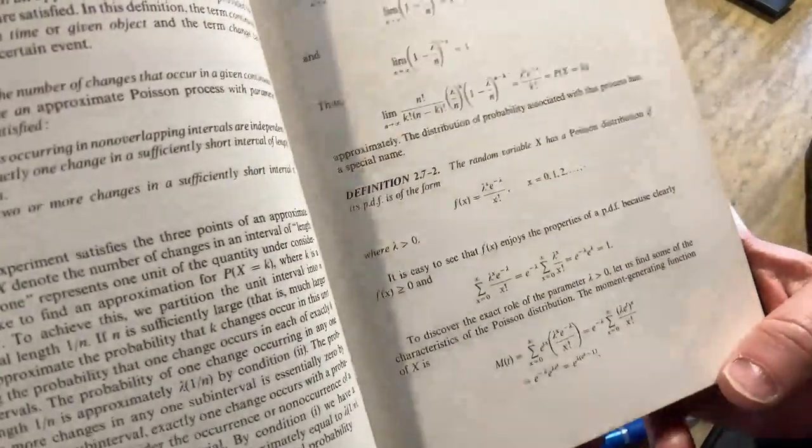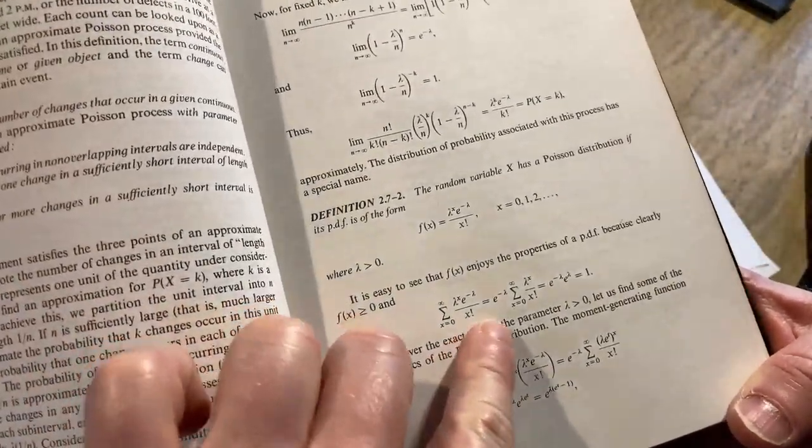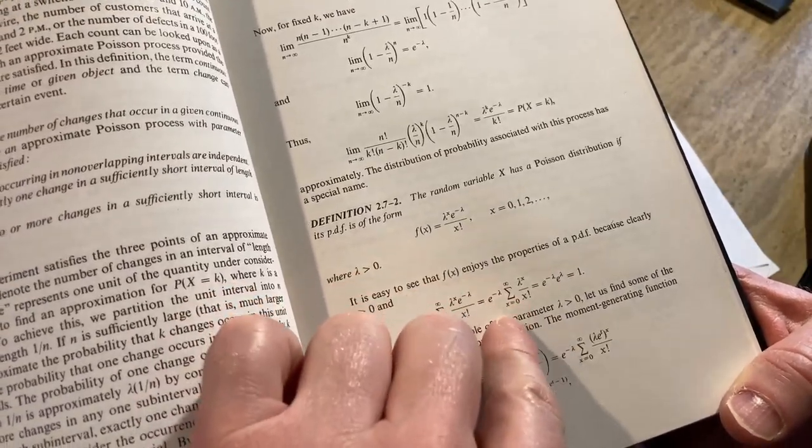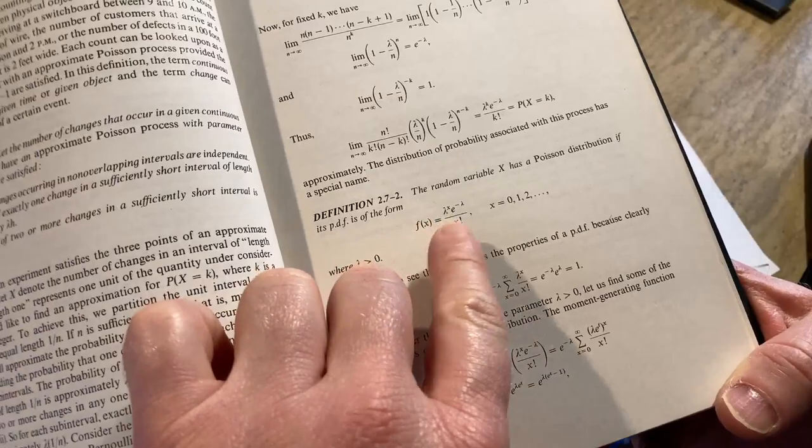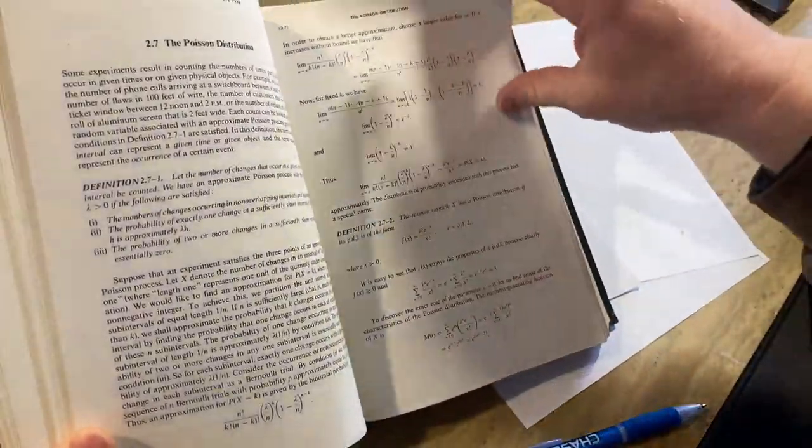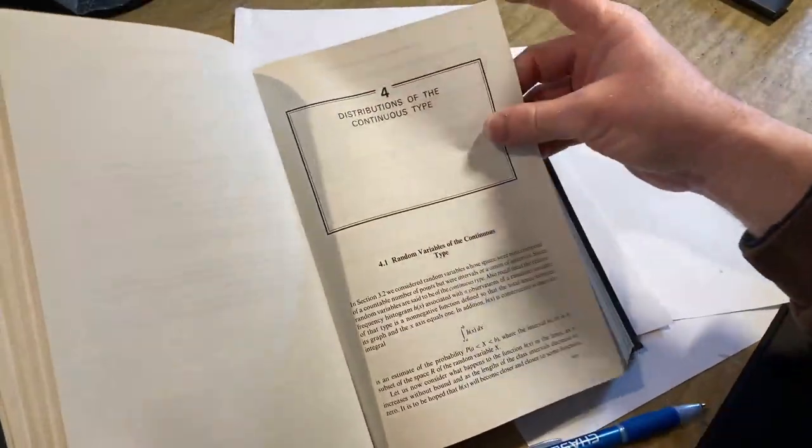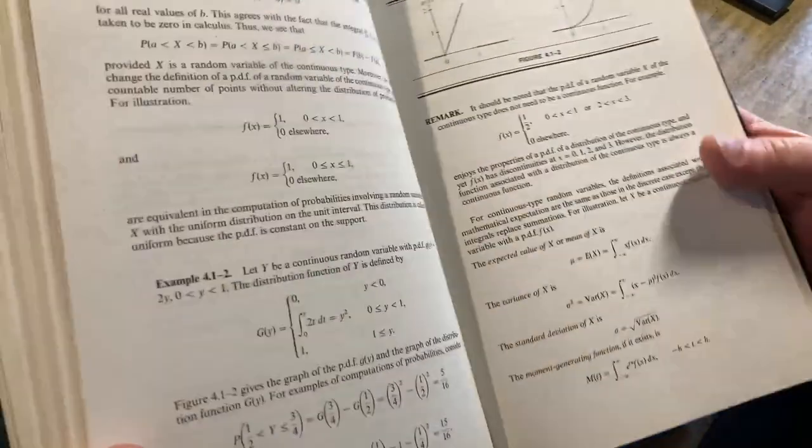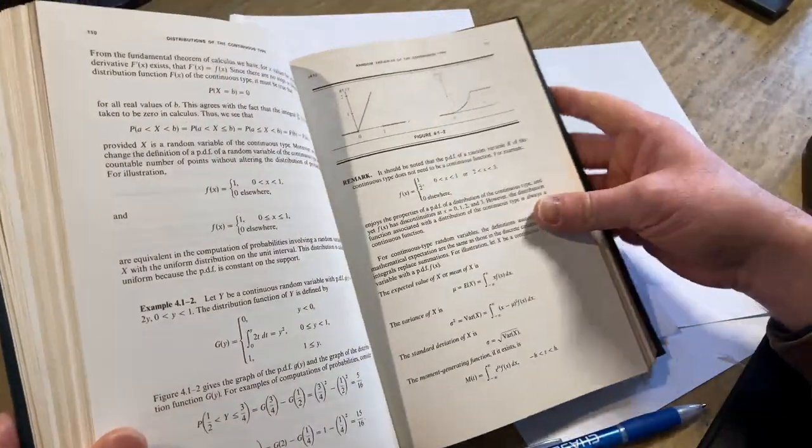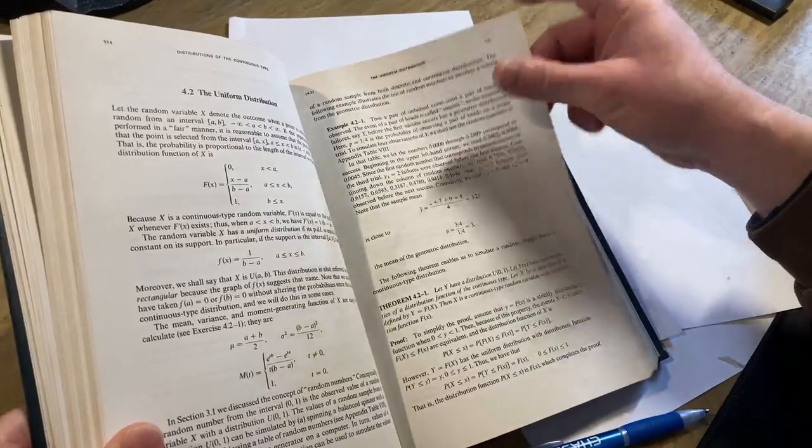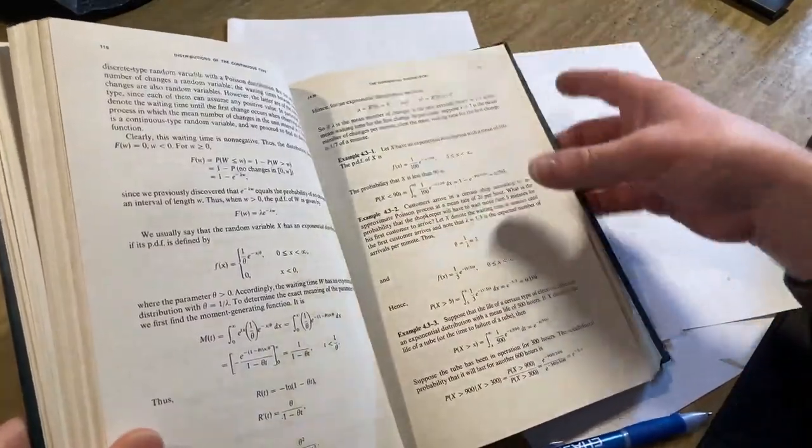So we're using that just in the verification process here to verify that this is the PDF, the probability distribution function for the Poisson distribution. So you use some calculus in this book. And that's, it's just right there. Basic Calc 2 stuff. There's a lot of integration. Yeah, here's some integration. But not yet. Yeah, some integration to do.